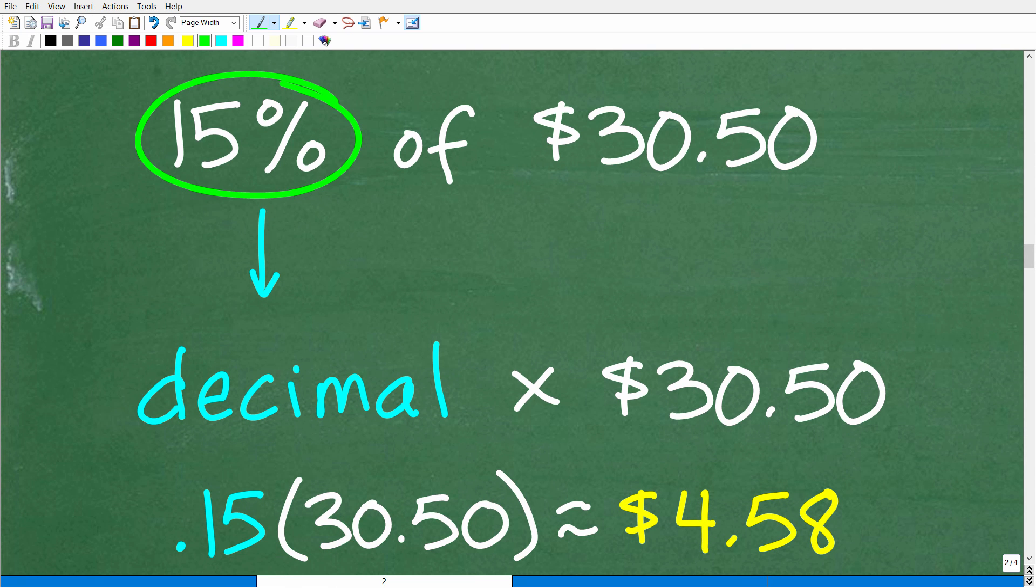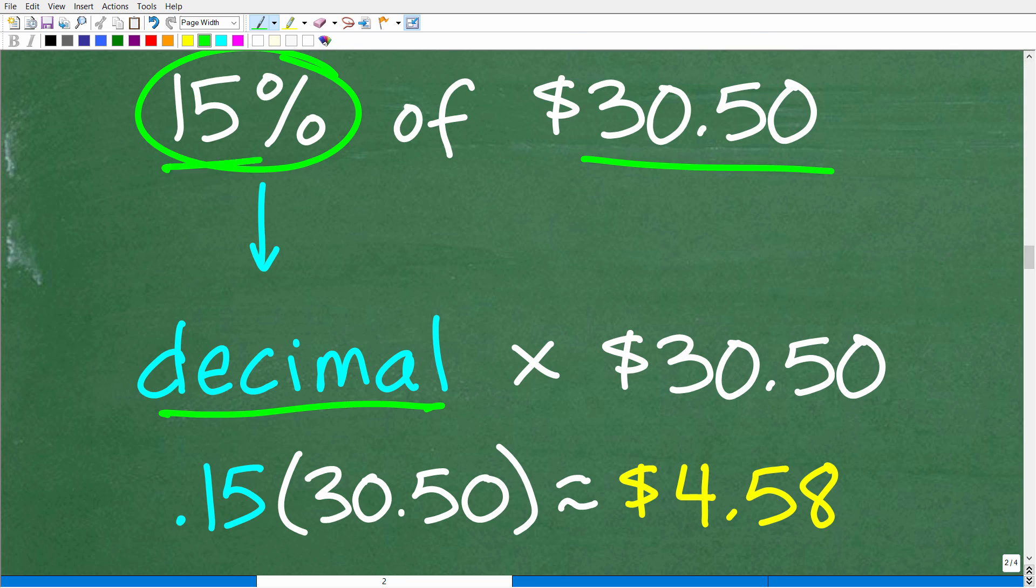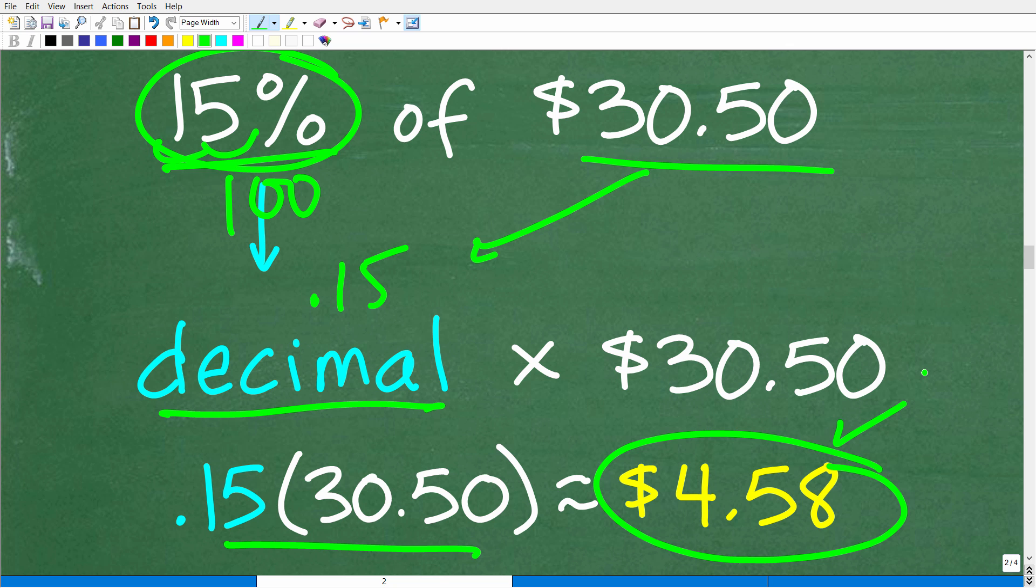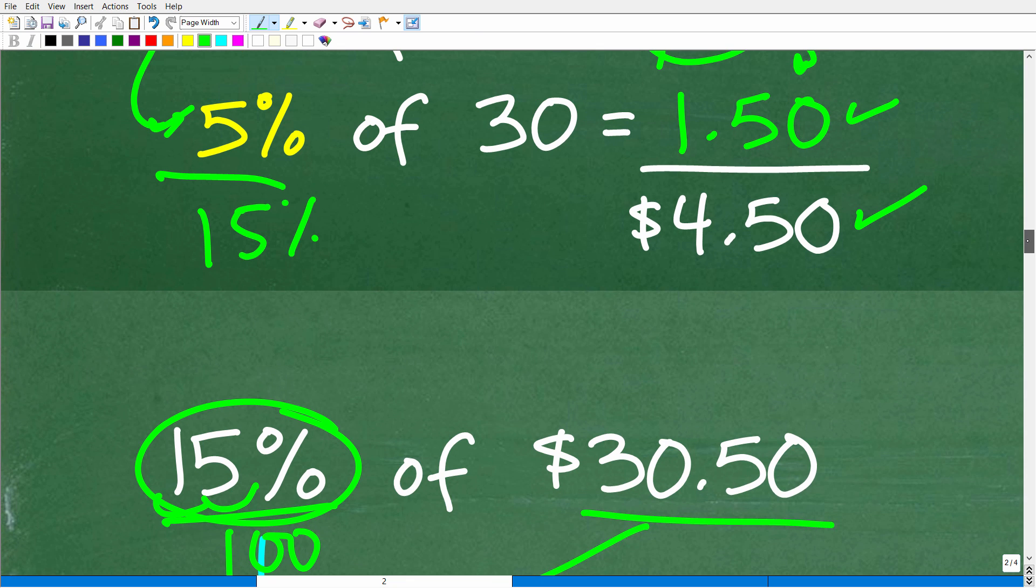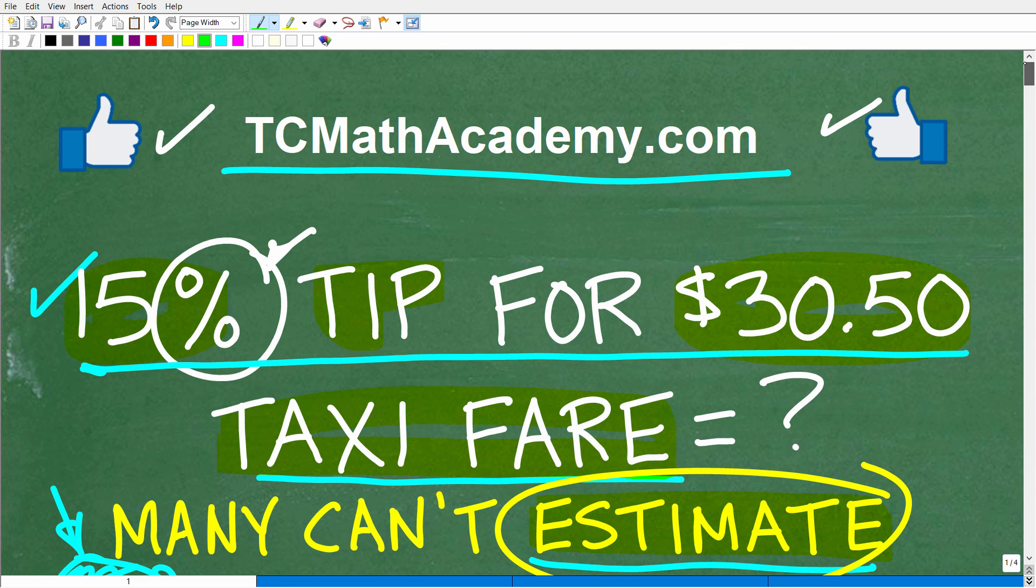But let's take a look at actually how to do this using a calculator. So what we want to do is take this percent, turn it into a decimal and then multiply by the actual value. In this case, it was $30 and 50 cents. So 15% as a decimal. Remember what we need to do is divide by 100, which is the same thing as moving a decimal point over two places to the left. So that's 0.15. So it's going to be 0.15 times 30.50. So in our calculator, 0.15 times 30.50 is approximately $4 and 58 cents. So this would be the actual 15% tip. So even if you just gave this taxi driver $4 and 50 cents, it's not quite 15% tip, but I'm pretty sure they would be very happy.